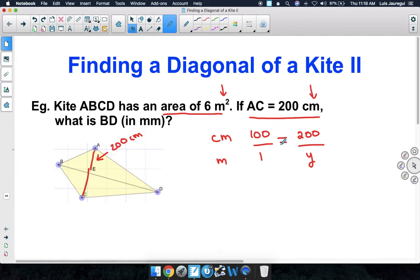Since we have a proportion, we can cross multiply to solve for Y. We have 100 times Y is 100Y, and that should be equal to 1 times 200, which is simply 200. Let's solve for Y by dividing by 100 on both sides of the equation, and we get that 100 divided by 100 is 1. 1 times Y is Y, and that is equal to 200 divided by 100, which is 2. Therefore, 200 centimeters is equal to 2 meters.